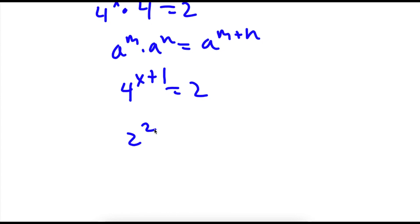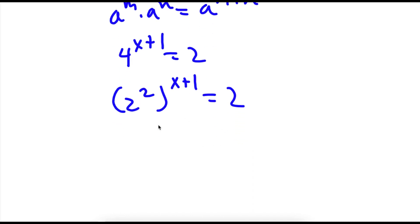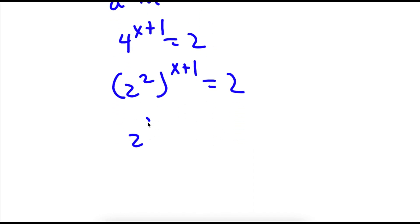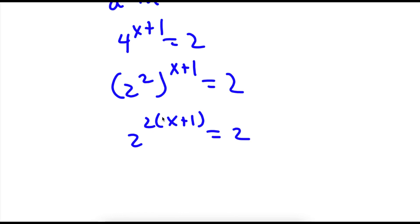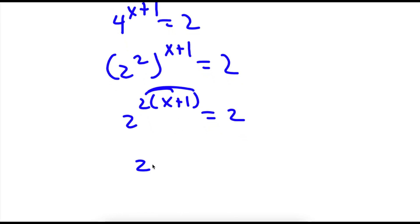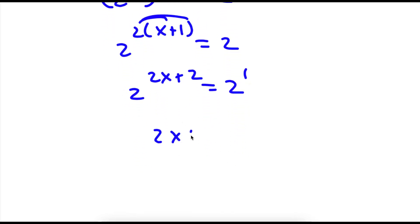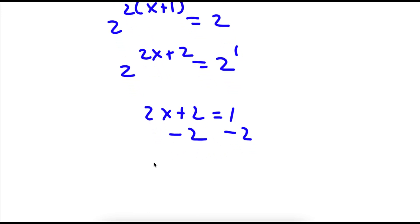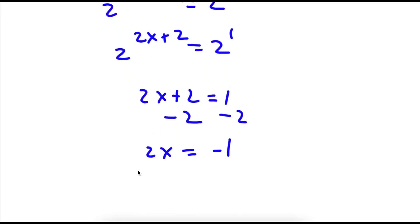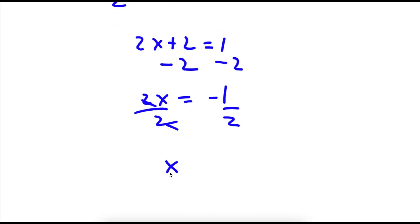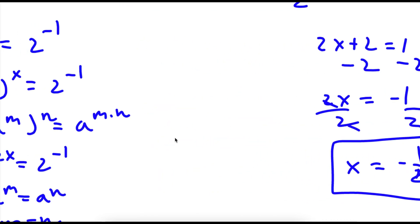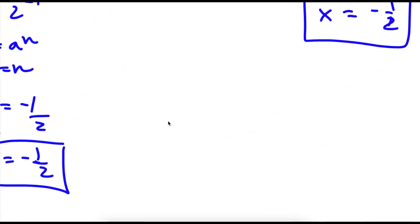Now 4 is the same thing as 2 squared, so I have 2 squared to the power of x plus 1 is equal to 2. This equals 2 to the power of 2 times (x plus 1) is equal to 2. So I distribute the 2 and get 2 to the power of 2x plus 2 is equal to 2. 2 is the same thing as 2 to the power of 1, so I get 2x plus 2 is equal to 1. Subtract 2 on both sides, so I get 2x is equal to negative 1. Dividing both sides by 2, I get x is equal to negative 1 half. So as you can see, there were two different methods, but I got the same answer on both of them.